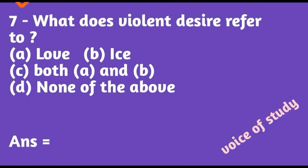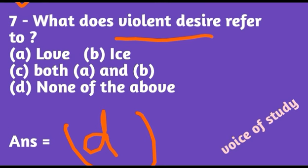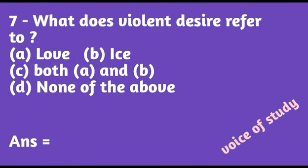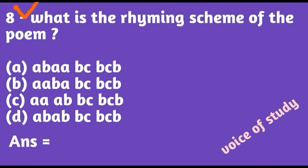Question number seven: what does violent desire refer to? The correct option is D — none of the above. The discussion on violent desire was not fully done here, but option D is the correct answer.